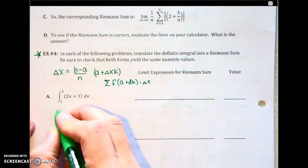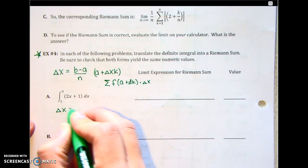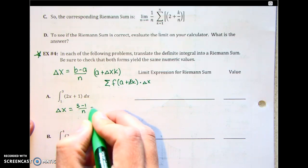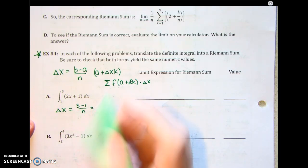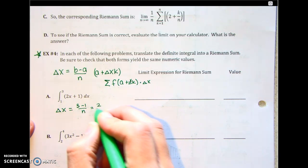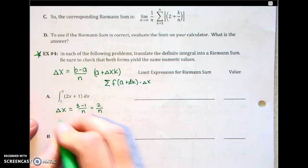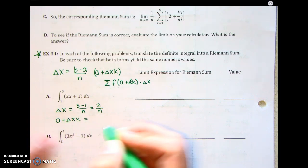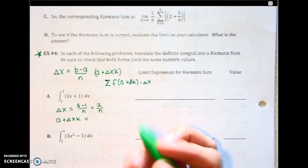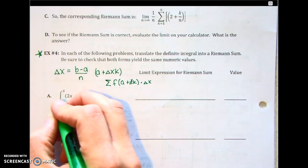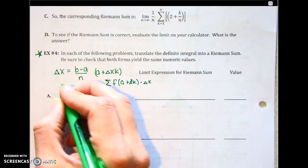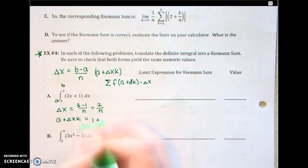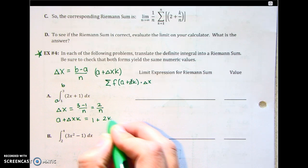Let's do example a. The change in x is going to be 3 minus 1 over n, which is 2 over n. And then a plus delta x times k — where do you get a from? A is your lower limit, so a is 1. So we have 1 plus 2 over n times k, which is 2k over n.